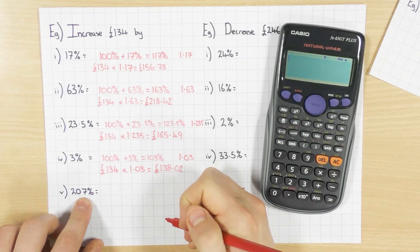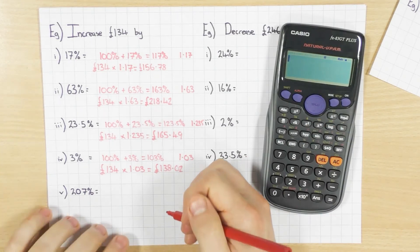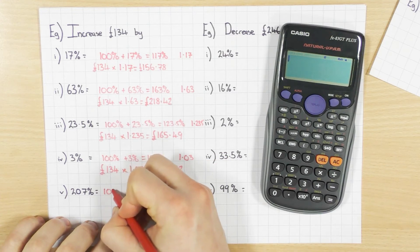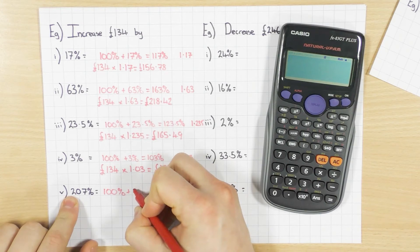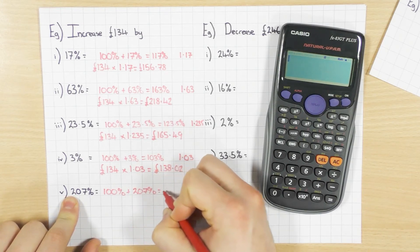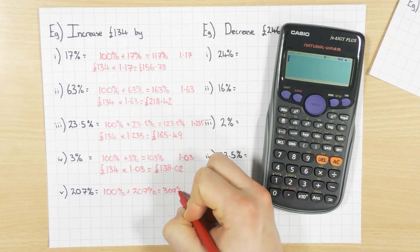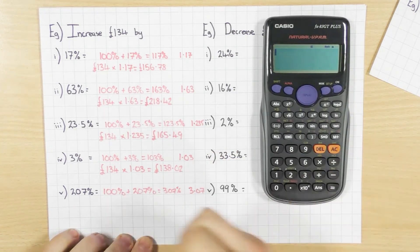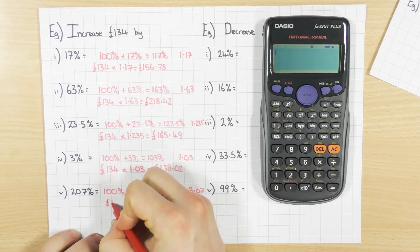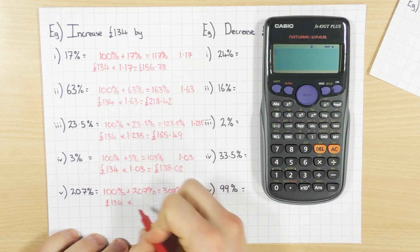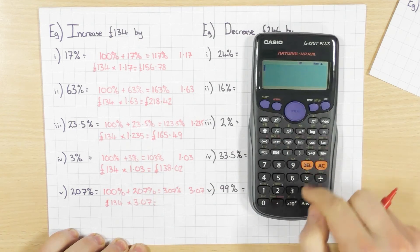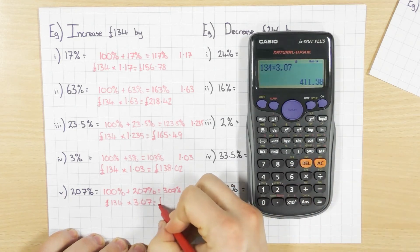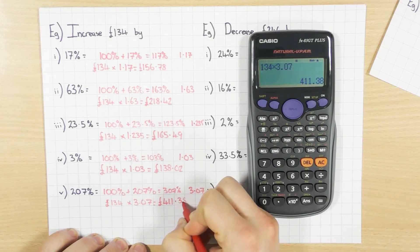And the last one for increasing: 207%. This one tripped up a couple of my students in a recent test because they didn't start off with 100%. Remember, you always start off with 100%, and if it's increasing you add it on, which gives you 307%. So the decimal multiplier is 3.07. So £134 times by 3.07 gives us £411.38.